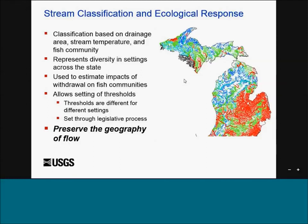The NHD and NHDPlus provided the background data framework to build these withdrawal models, and subsequently served as the data structure for the legislation passed in Michigan in 2008. The NHDPlus brought in information about the catchments associated with each NHD reach, and that information was used in regression models to make estimates of stream flow and stream temperature. One key step in Michigan's implementation was to classify streams into 11 different classes based on size and temperature, recognizing that all streams are different across the state.